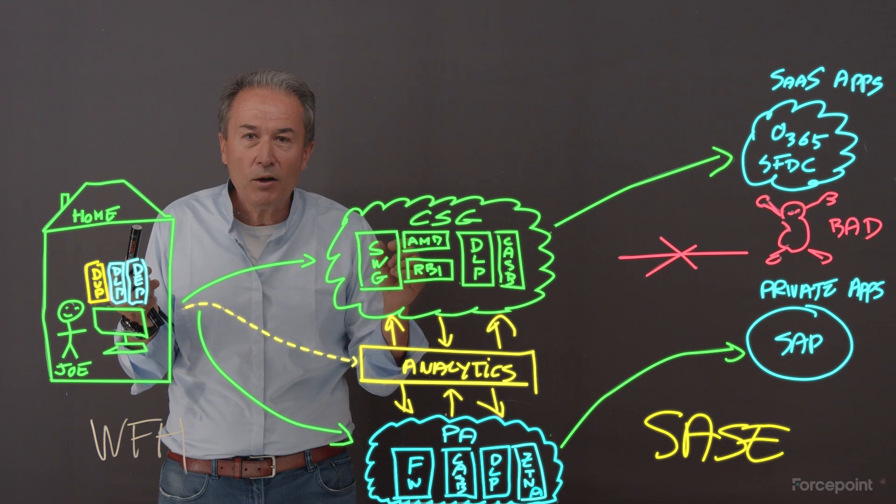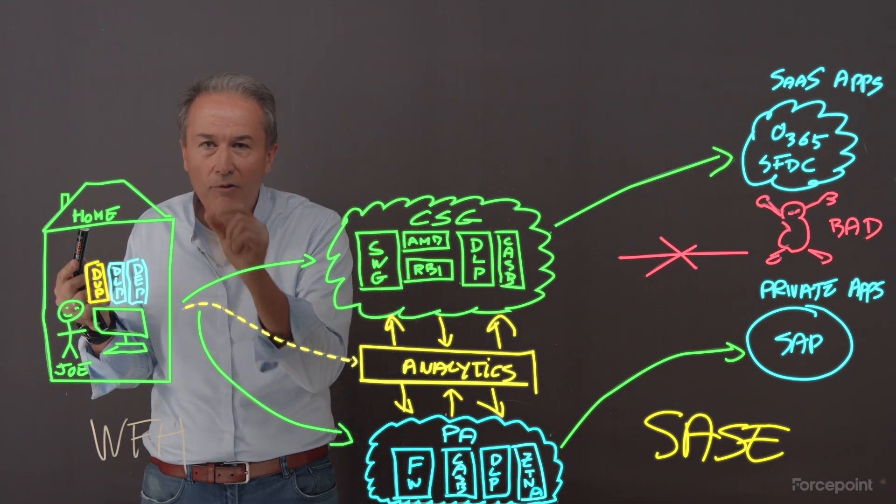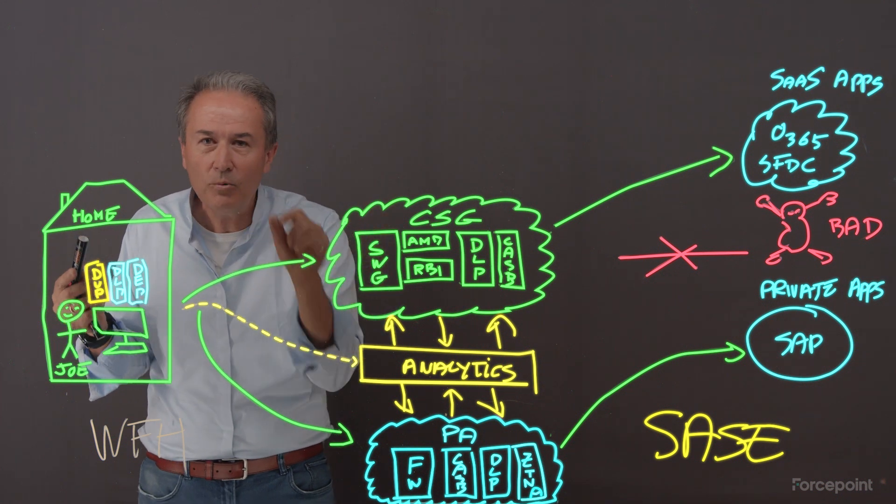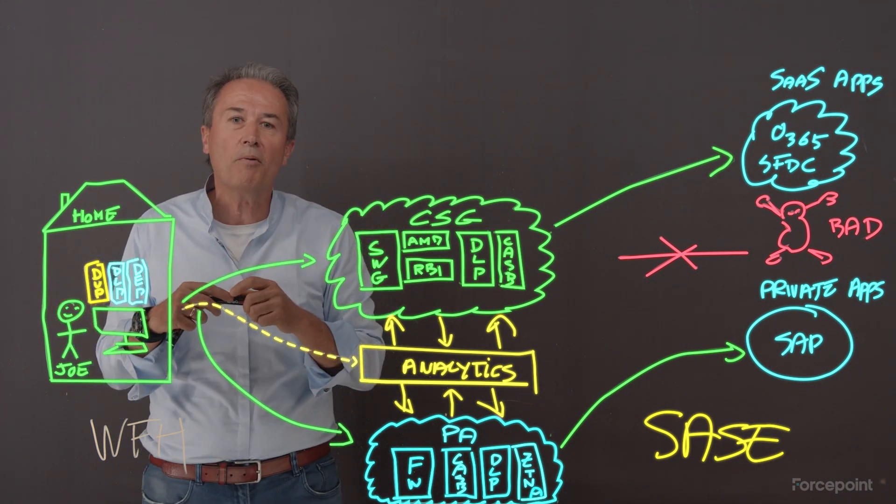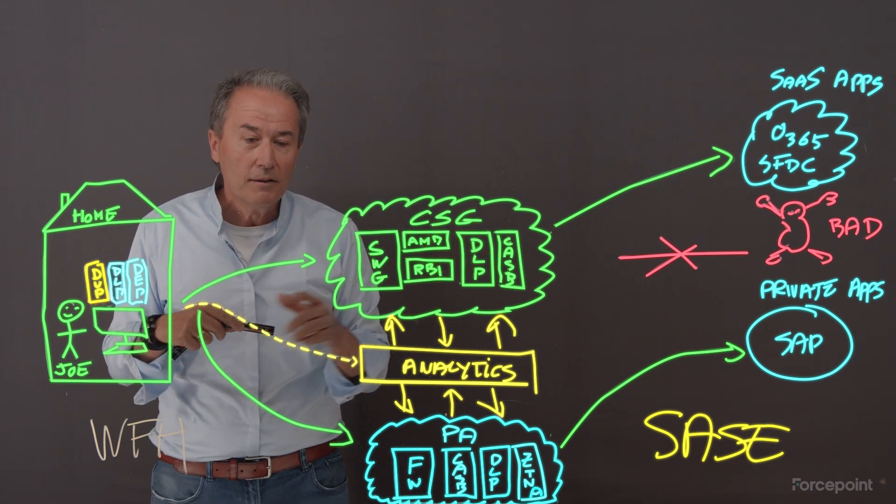What we're actually doing is we're writing automatically policy at the user level. For each and every Joe in the world, we are customizing the policy based on risk. Now that, nobody can do. We're doing it.